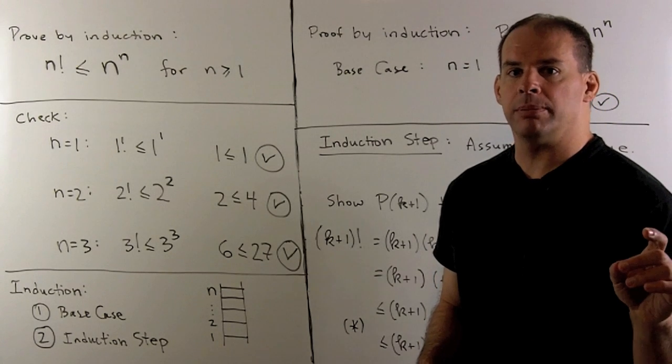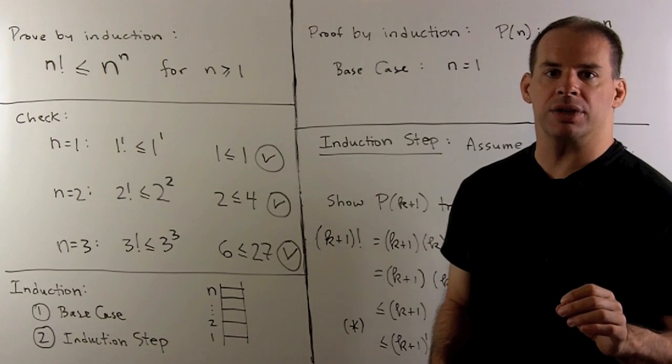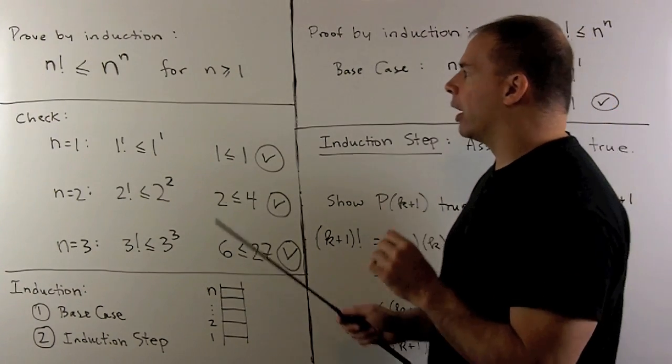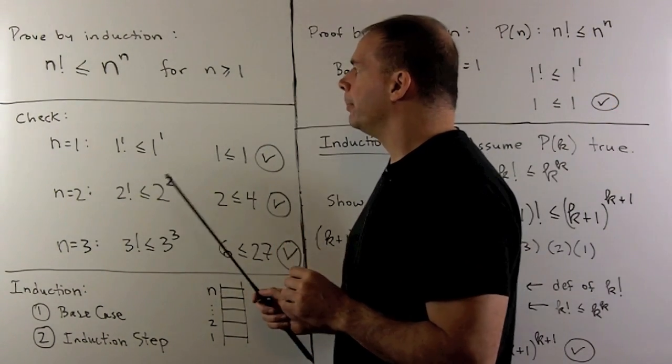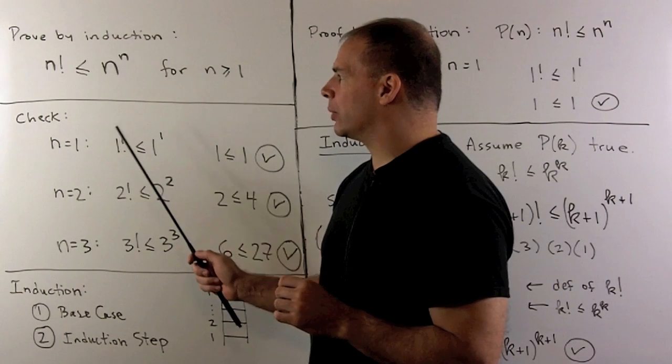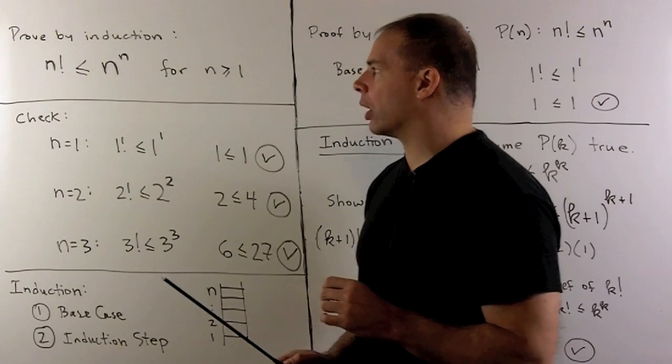Here's another type of proof by induction, one with inequalities. So we want to show for n greater than or equal to 1, that n factorial is less than or equal to n to the nth power.